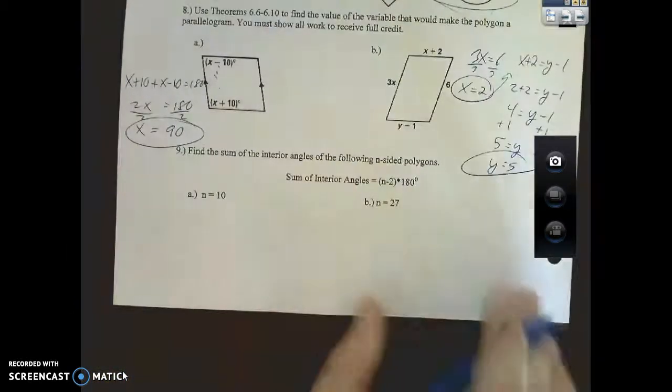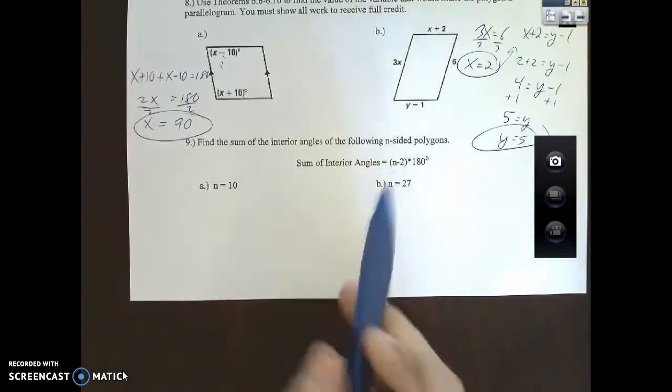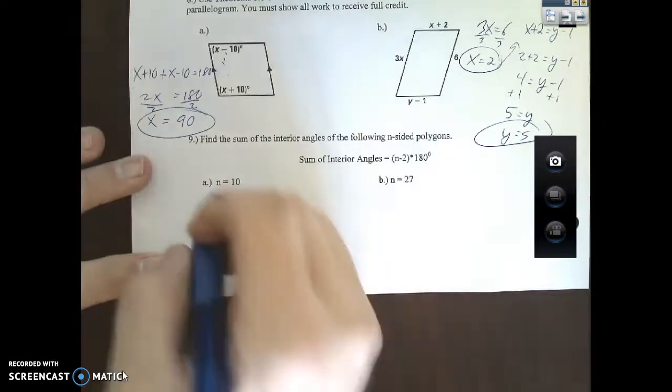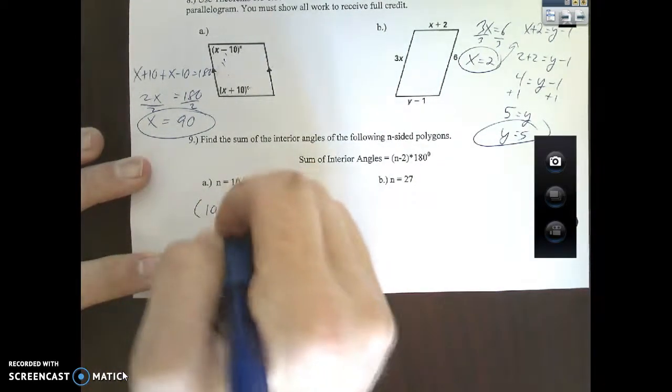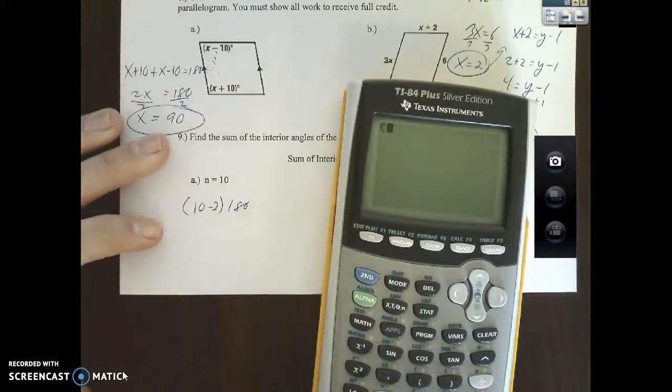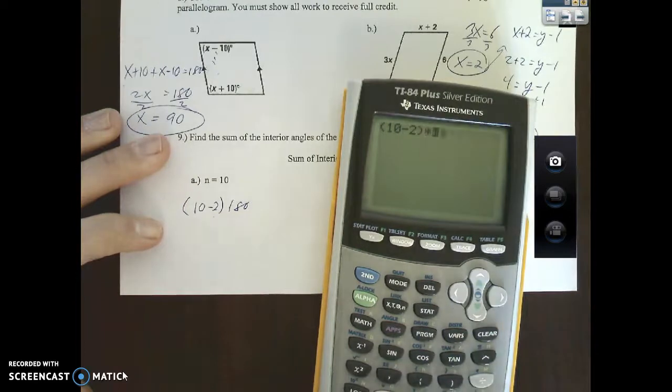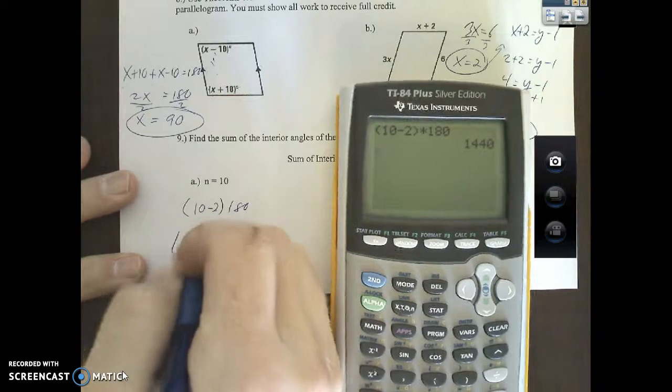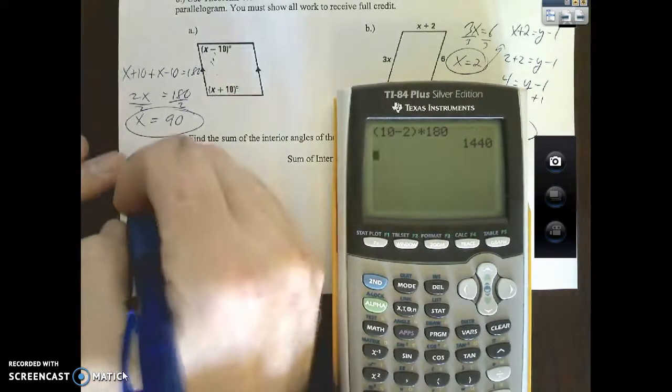This last part: find the sum of the interior angles of the following inside polygons. Here's your equation: n minus 2 times 180. I'm giving you the n, all I want you guys to do is plug this in to your calculator. Parentheses 10 minus 2 times 180, it's 1440.